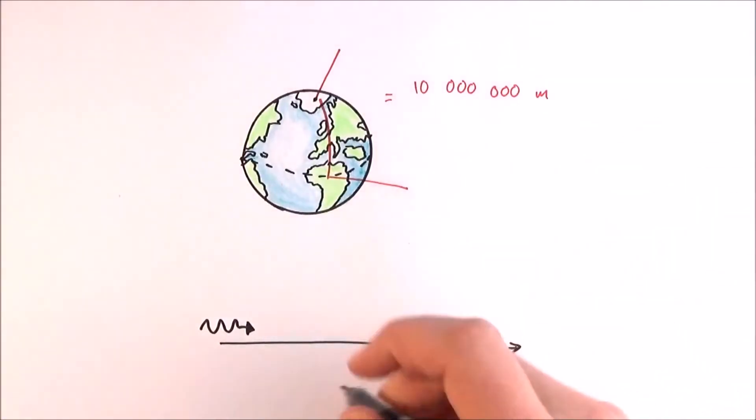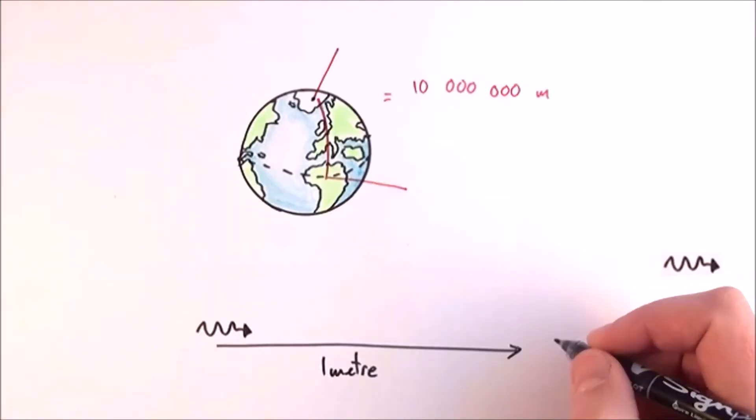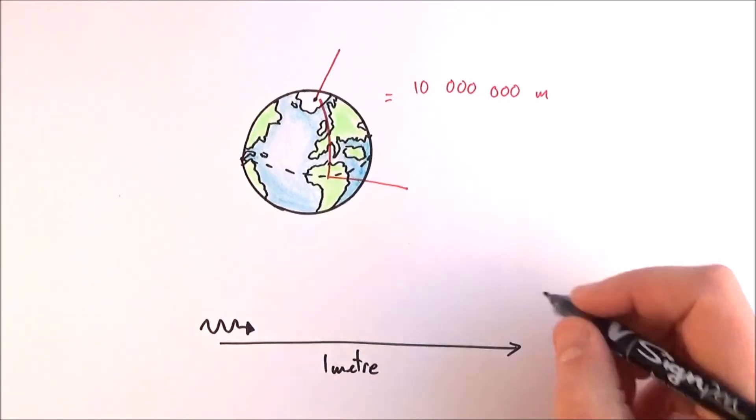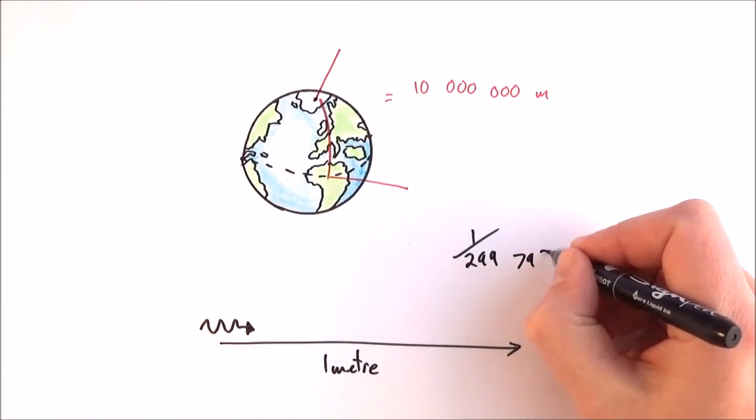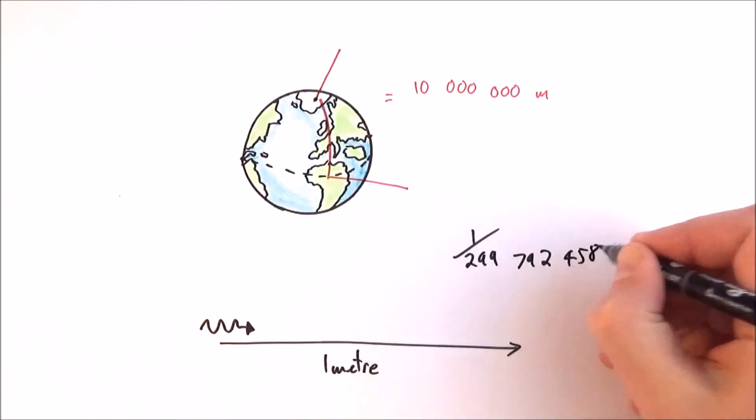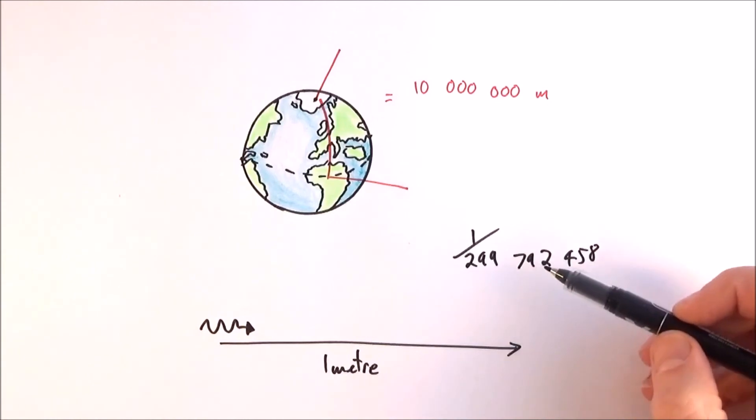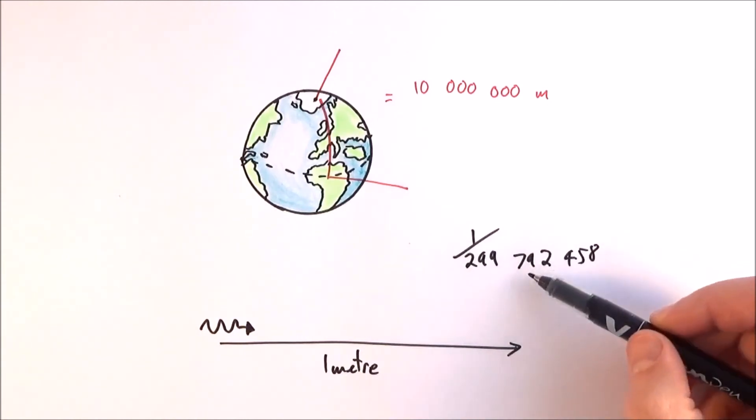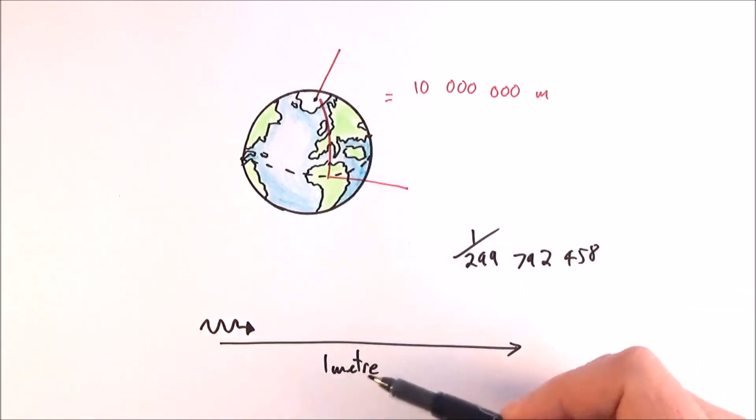Today we define one metre as the distance that light travels in one two-hundredth of a second. The speed of light is 299,792,458 metres per second. This gives rise to our current definition for one metre.